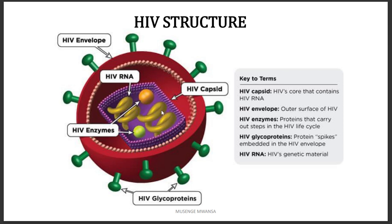Inside the capsid we have the two RNA molecules of HIV. We also have three types of enzymes found inside: the reverse transcriptase, the integrase, and the protease. We also have glycoproteins on the outside, which are able to attach to cell membrane receptors so the virus can penetrate the host cell.